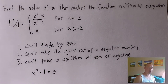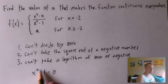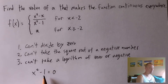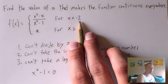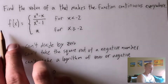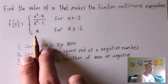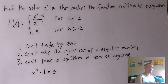Whatever X values make the denominator equal zero are X values not within the domain of this function — in other words, X values where this function would not be continuous. If any such X values fall within the domain of X less than negative two, then this function would not be continuous there, and the piecewise function won't be continuous no matter what A value we use. So we want to confirm that's not a problem before solving for A.